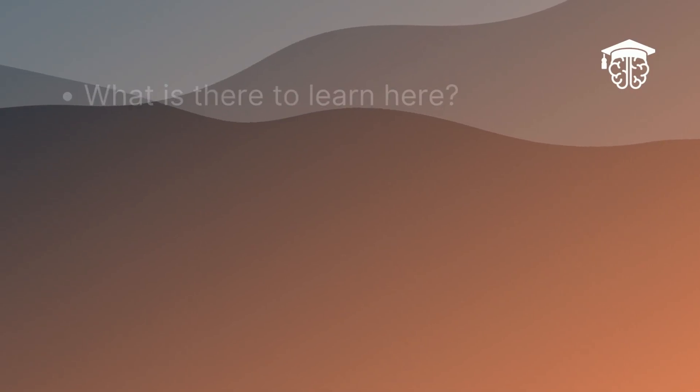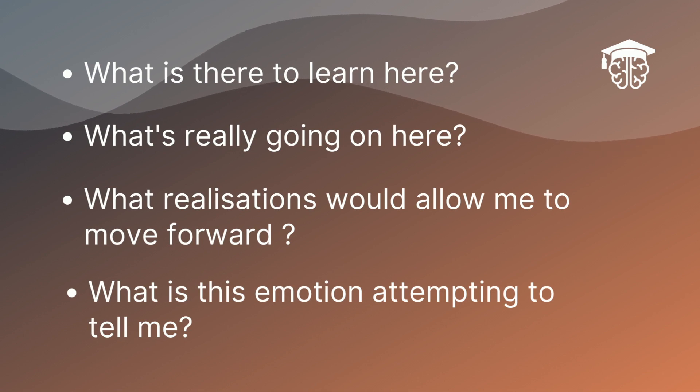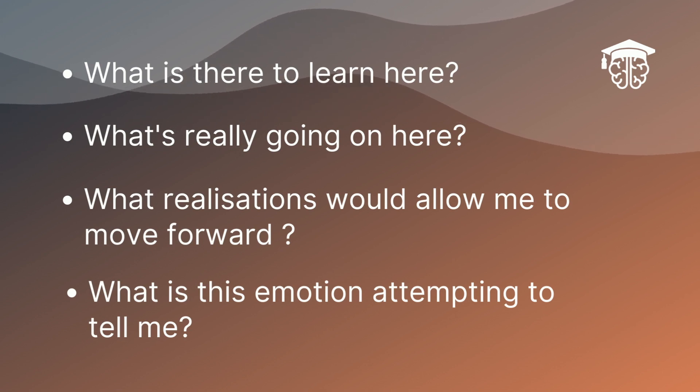You want to look at the bad experience and ask: what is there to learn here? What's really going on? What realisations about this situation would allow me to let go of this emotion and move forwards? What is this emotion attempting to tell me, and what is it attempting to do for me? If I was to change my behaviour or lifestyle in some way that would honour this emotion and allow it to release, what would that change be? When you do this, you often get a really big release because you're honouring the emotion, listening to what it's attempting to tell you, and actually taking action. That's a really healthy way to process your emotions.